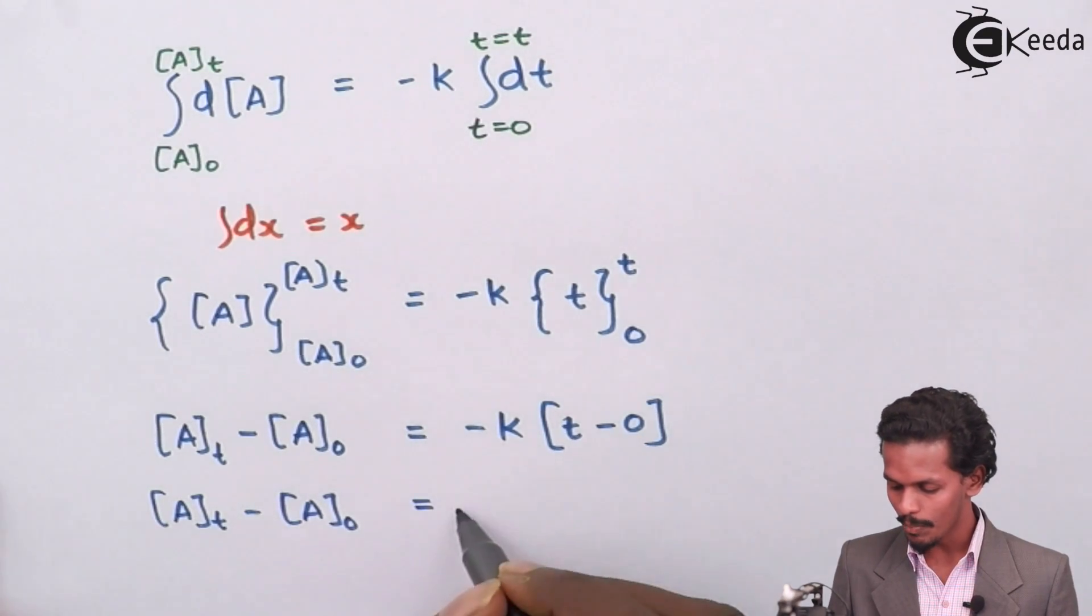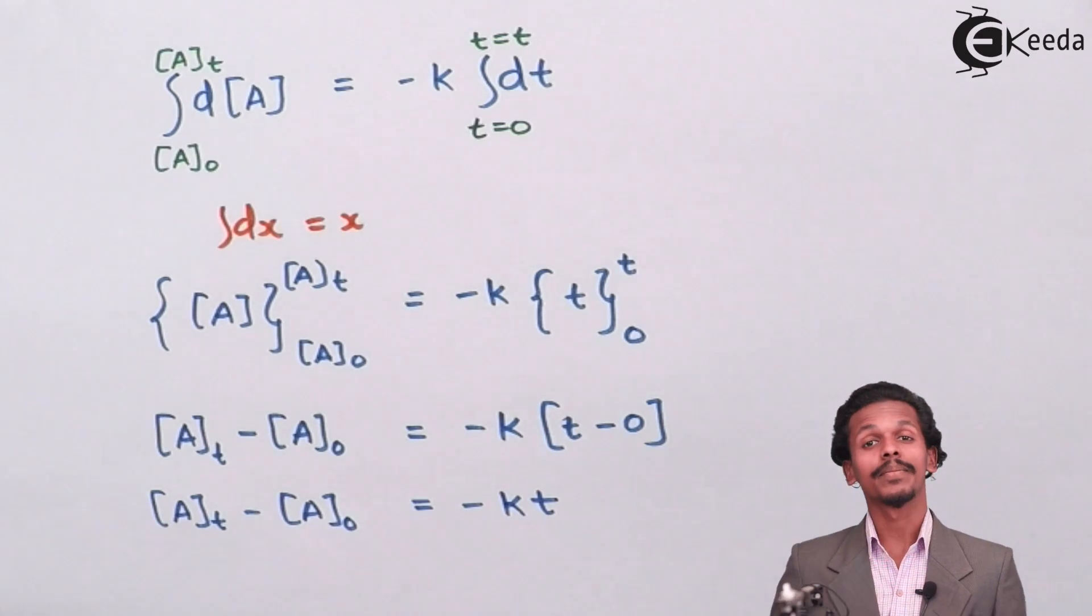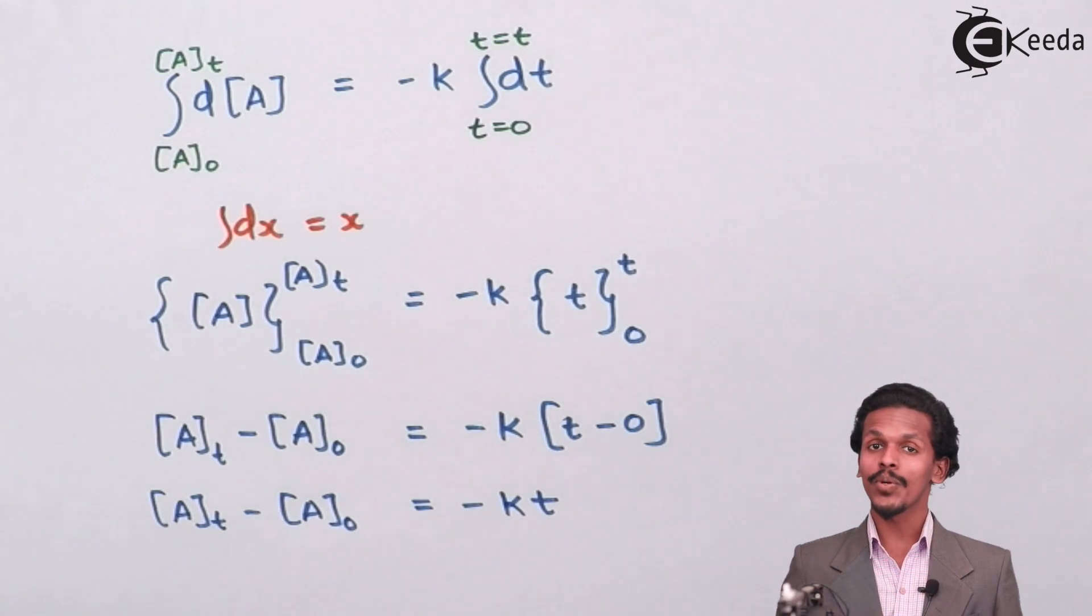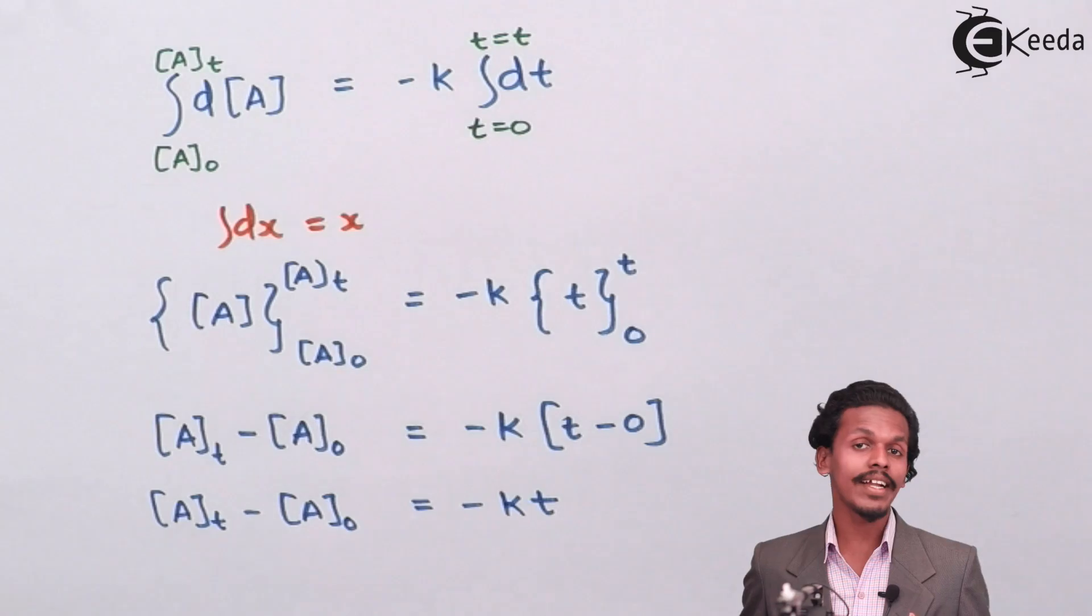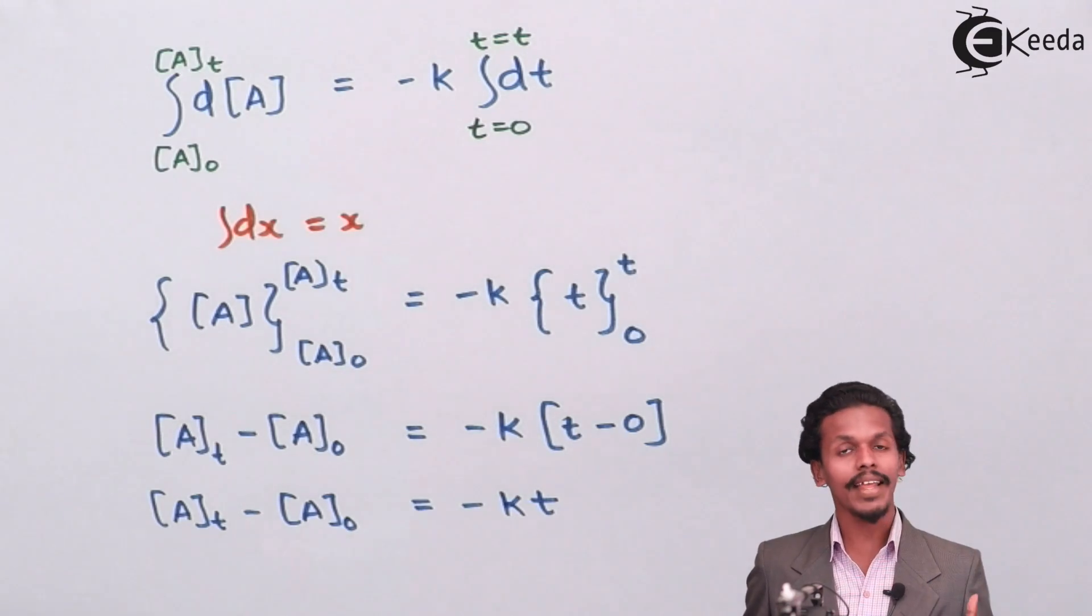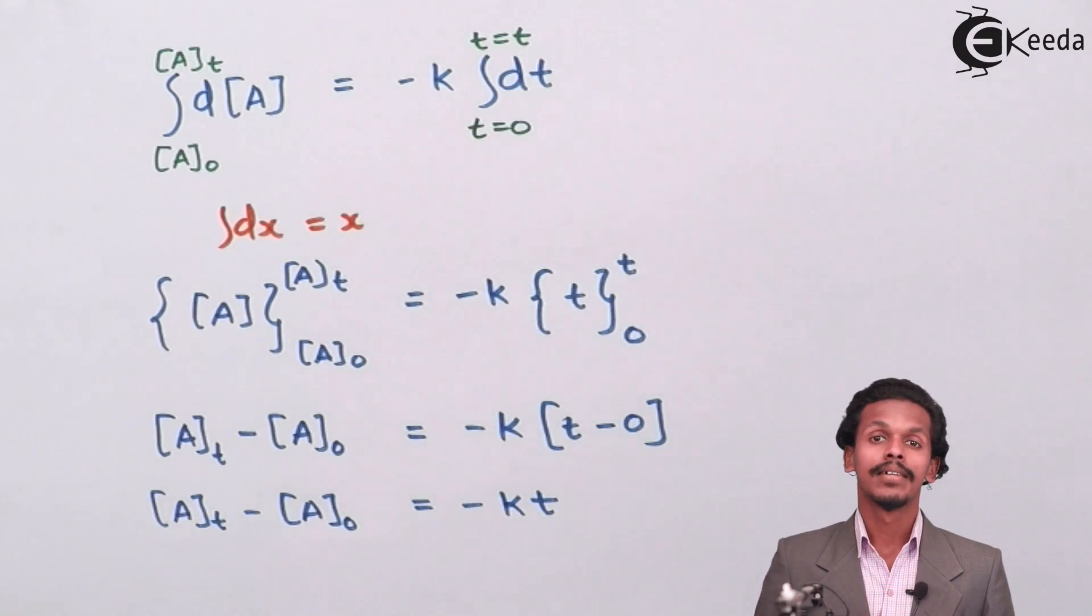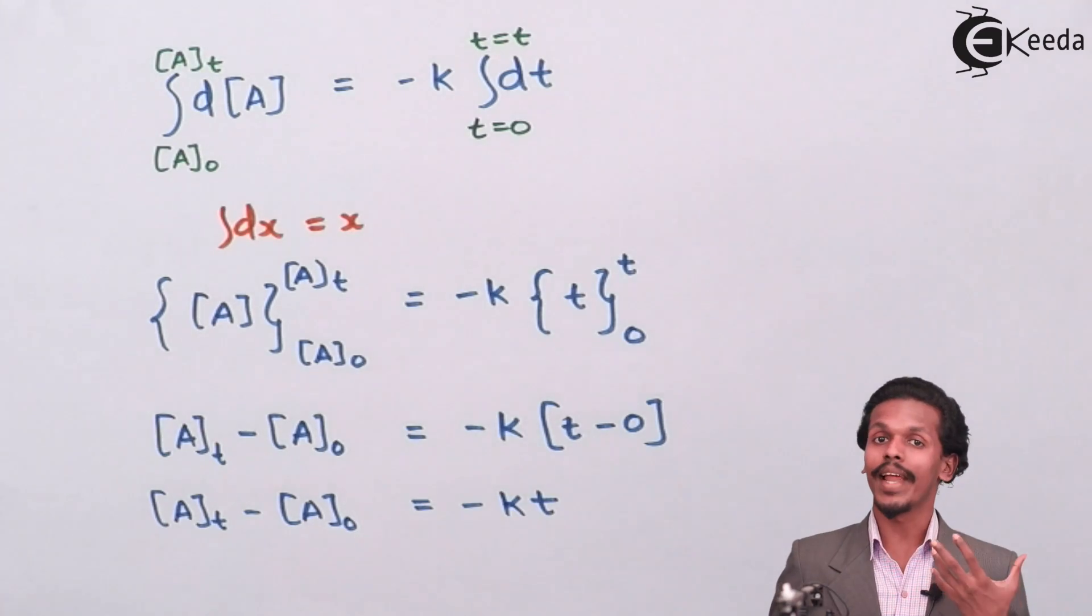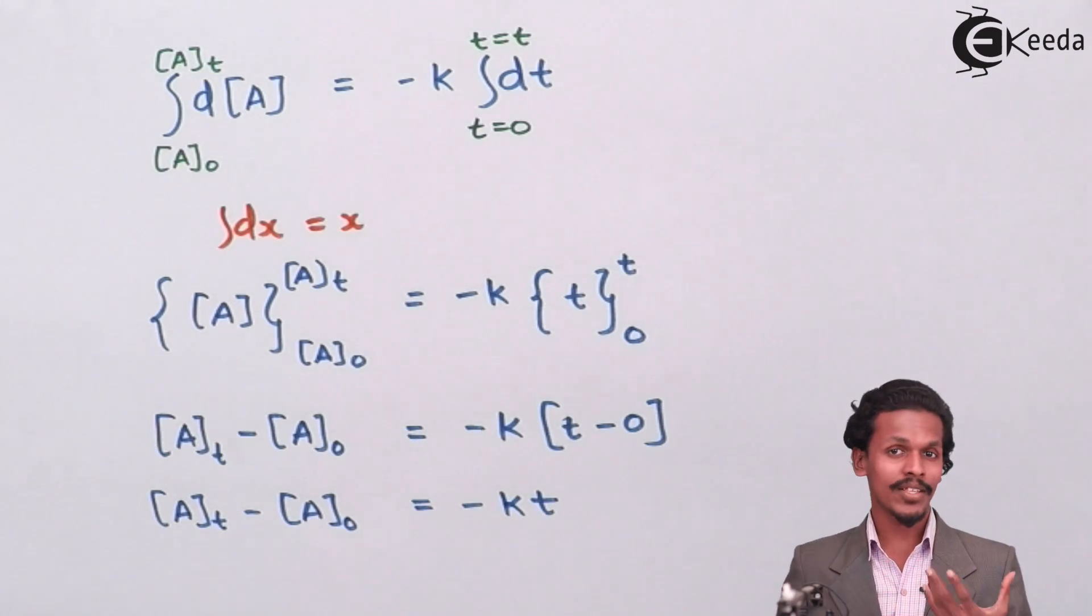Now we are going to relate the rate constant with the further parameters like [A]₀ and [A]ₜ. So let us do it.